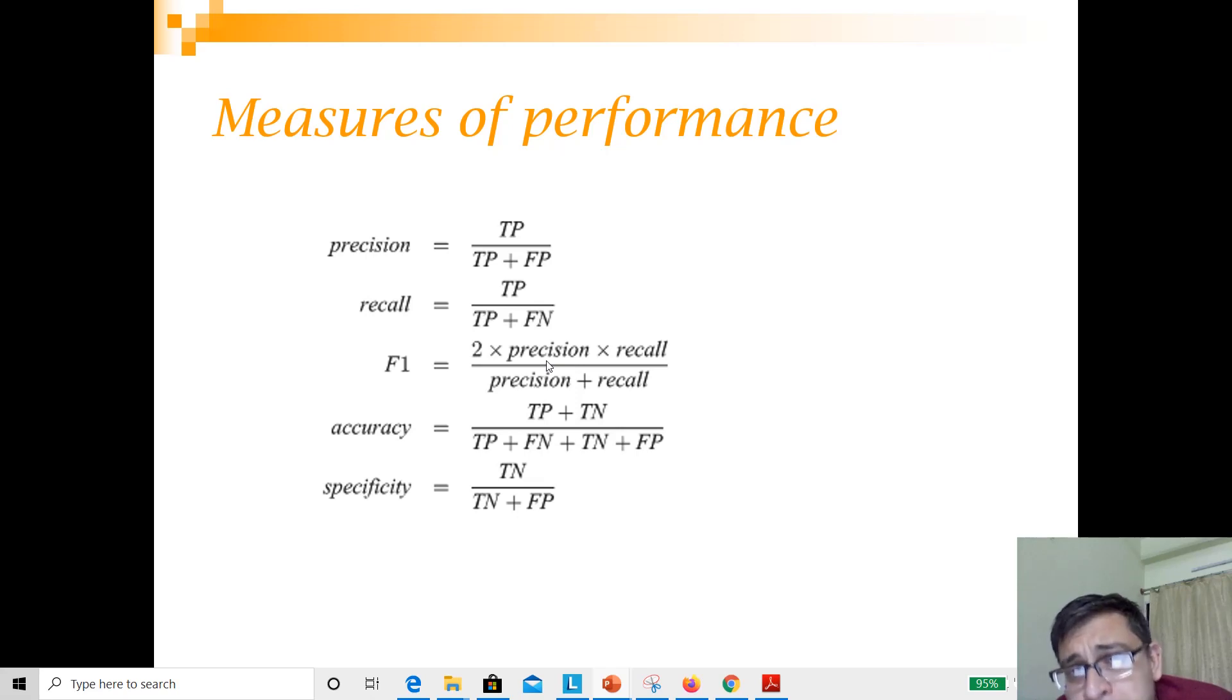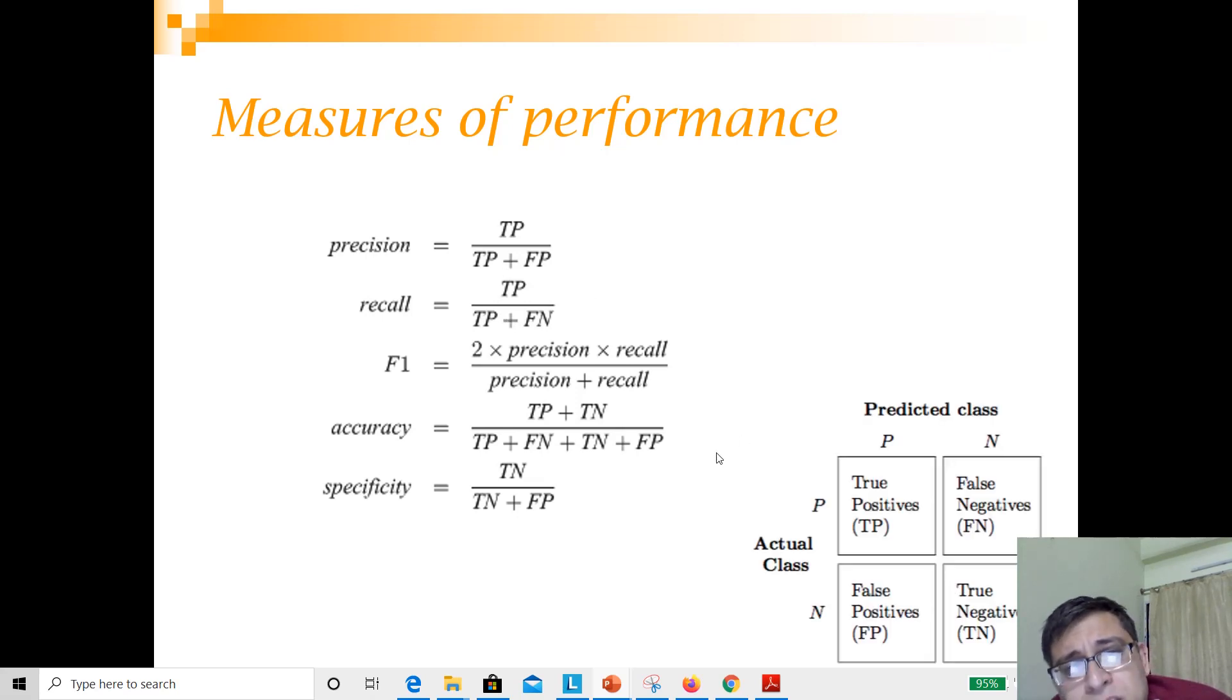Here are some more measures of classification performance. One is called precision. Precision is how accurate you are in predicting the positive classes. True positive and false positive are the ones you predicted positive, and how many were actually accurate - this is like classification accuracy for the positive class. What is recall? If you look in context to your confusion matrix, true positive and false negative are the actual positive classes. Out of the actual positive classes, how many could you find out?